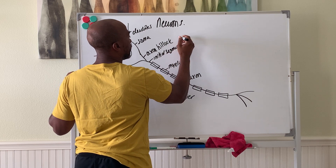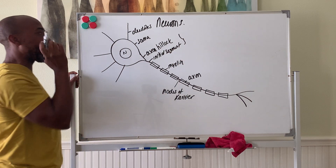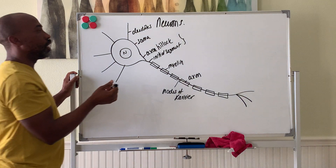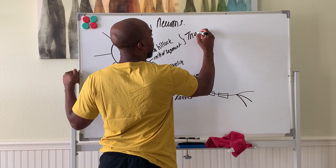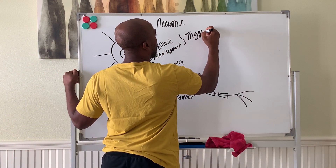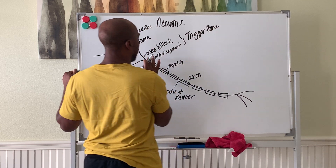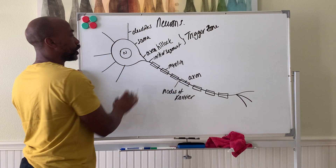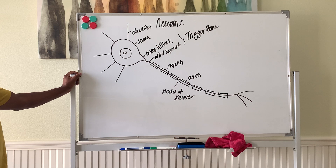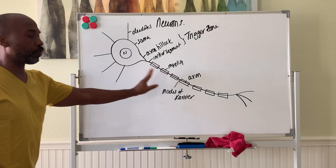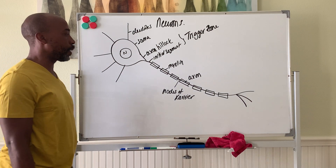These two parts — the initial segment and the axon hillock — we call that your trigger zone, meaning this is where your nerve signals begin. That's the zone that determines whether or not the neuron will fire a nerve impulse called an action potential.